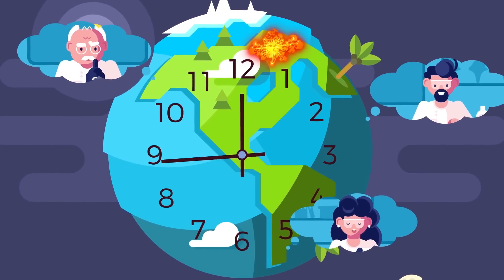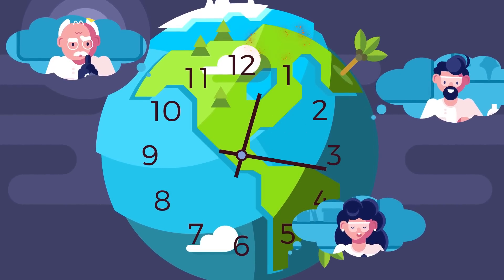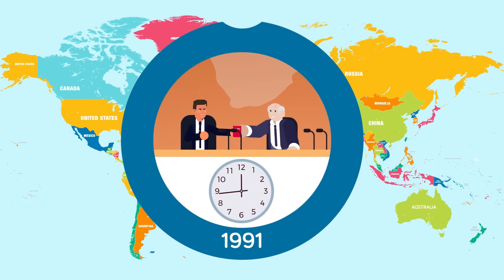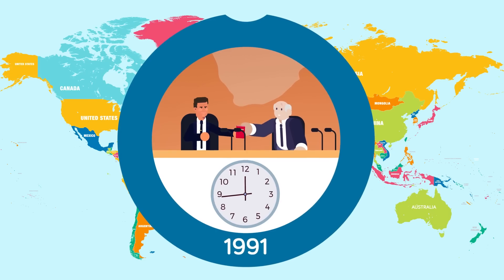First created in 1947, the Doomsday Clock has been reset multiple times. Mankind's future looked promising back in 1991.